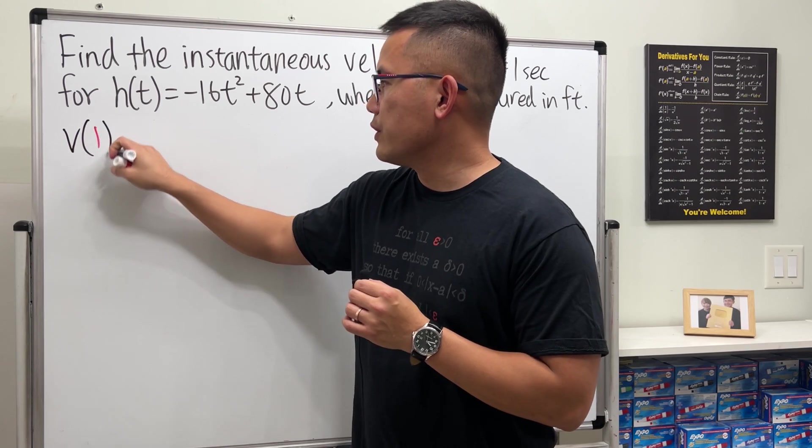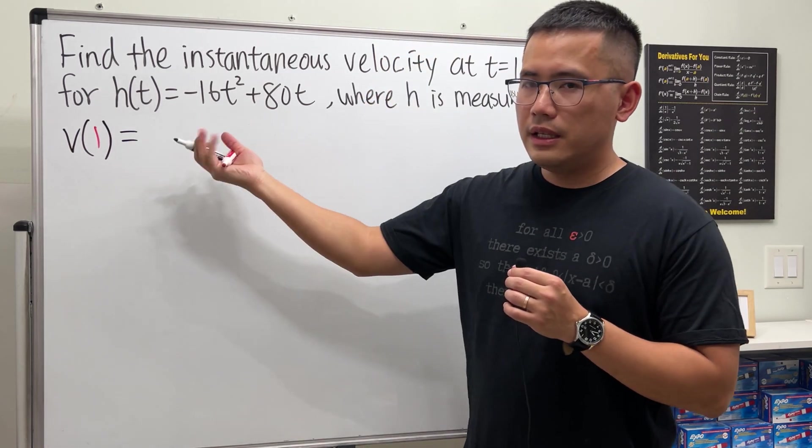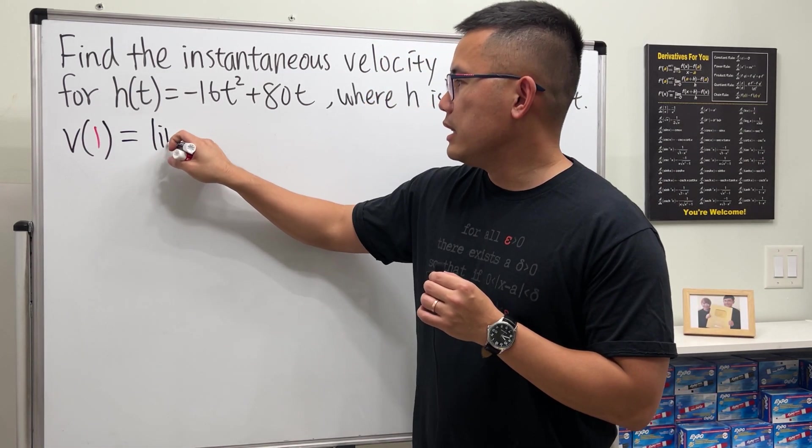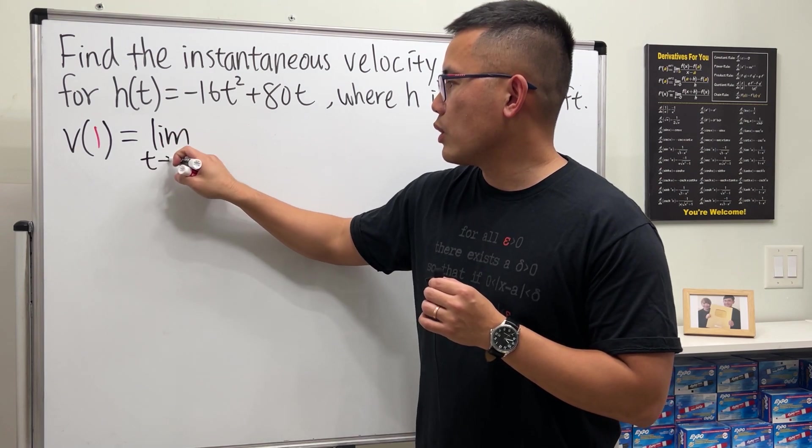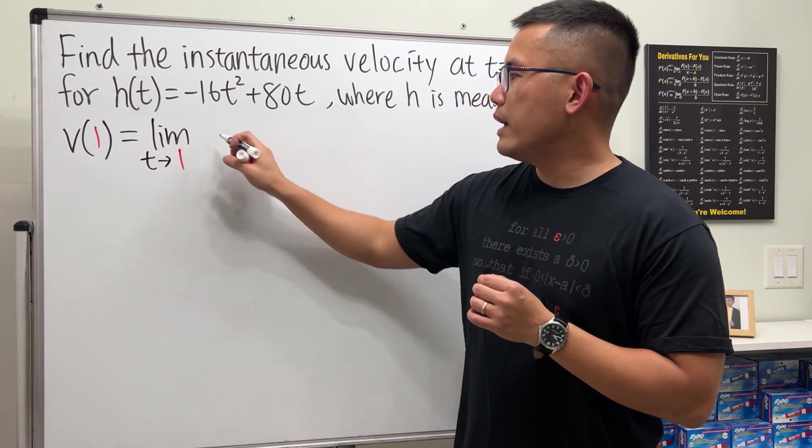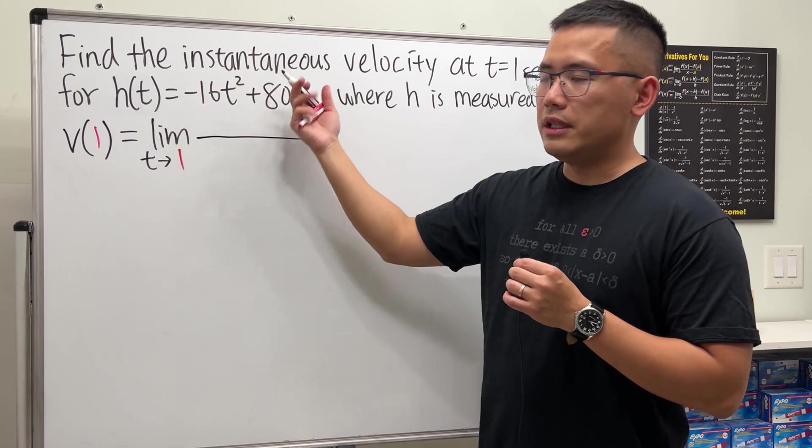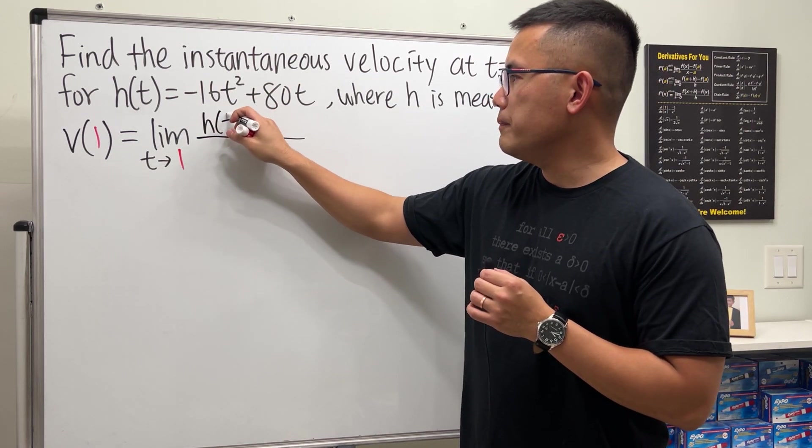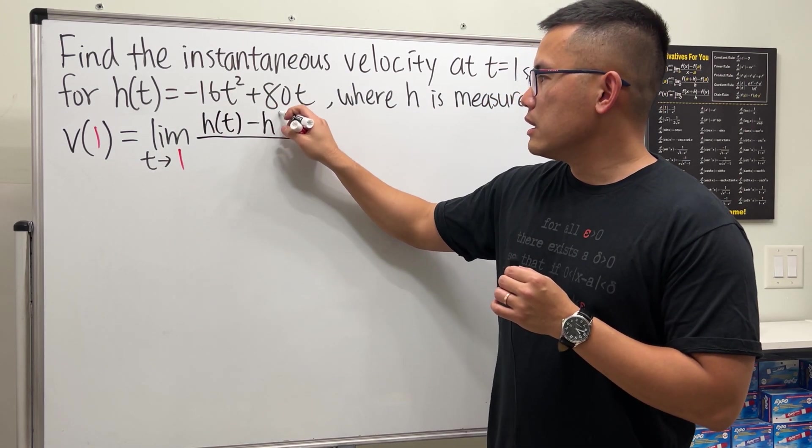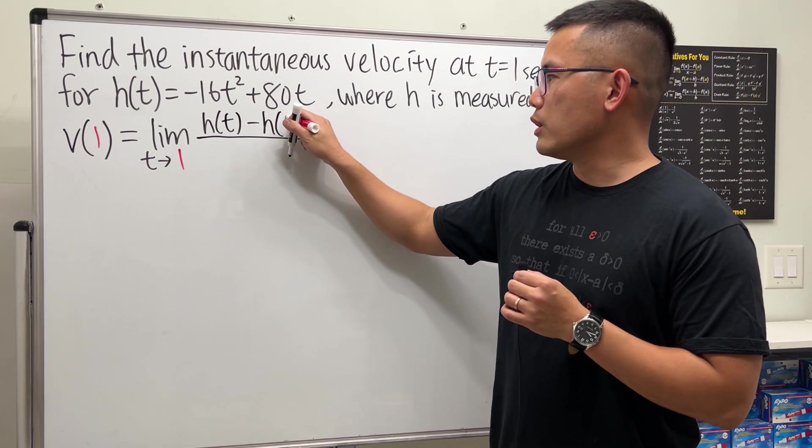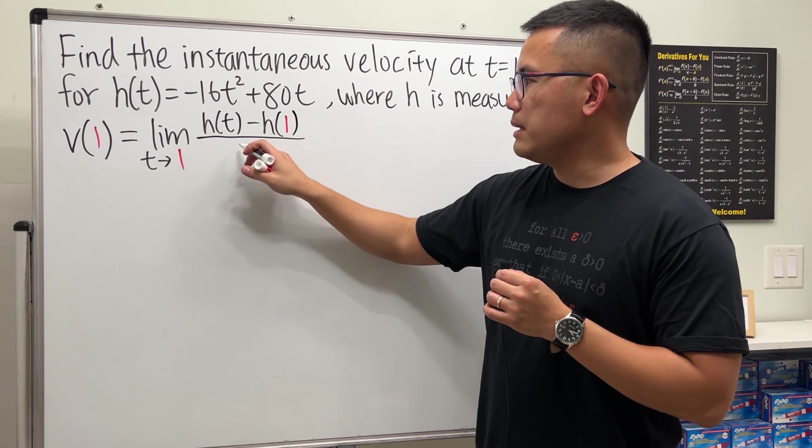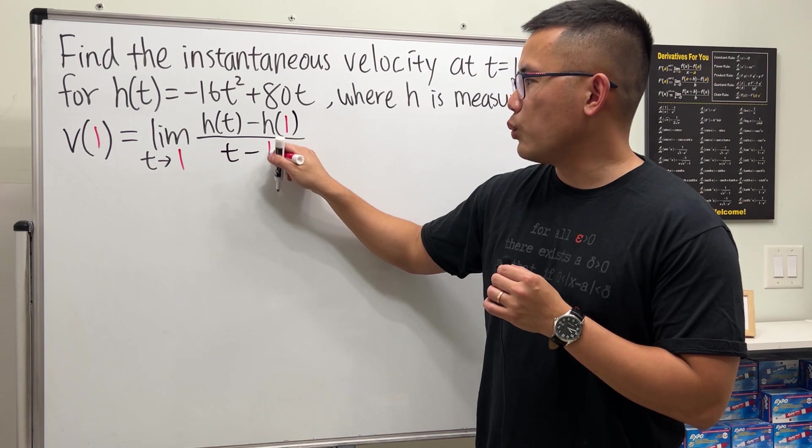V of 1, that's the notation for the instantaneous velocity. This right here is defined to be the limit when t goes to 1. And then we will have the position function. In this case, it's h of t minus the position when t is equal to 1. So we have h of 1 and then divided by t minus 1.